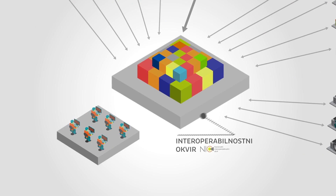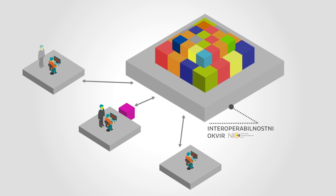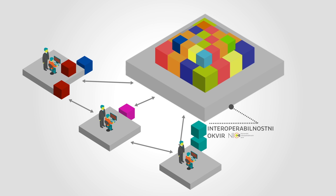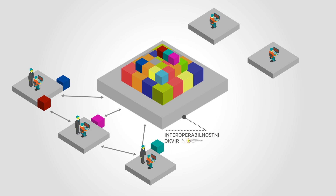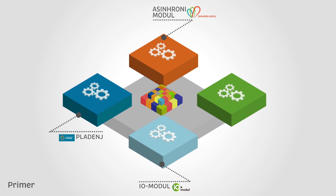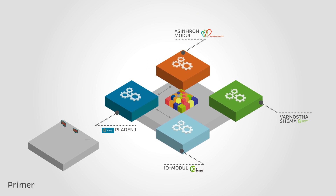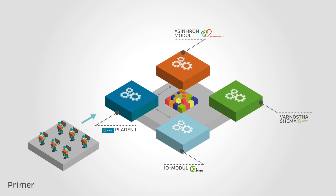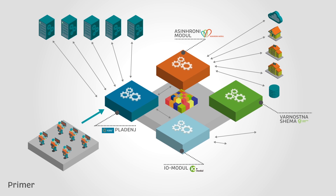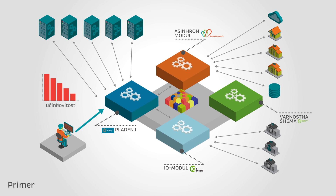There already are many useful products published and explained on the NeoPortal. Institutions can use them when they design their business processes and related information systems. One example is the building blocks for electronic data inquiries: the tray, IO module, the asynchronous module and the security platform. If an institution wants to electronically gather data from data sources, it can use these building blocks and their functionalities, lowering development and operations costs and improving the uniformity of information solutions.